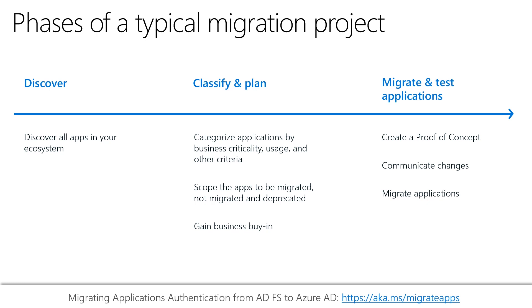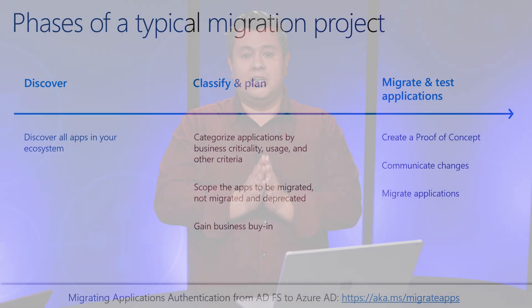Once they have discovered those applications, they need to think about how they are going to classify and plan those applications — whether those apps need to be modernized, whether those apps can be migrated and replaced by modern versions, whether they have applications in ADFS or some other third-party identity providers that they can easily move to Azure AD, or whether they have legacy applications using protocols like Kerberos, header-based authentication, or form-based authentication that they can publish for remote access through the Azure AD Application Proxy.